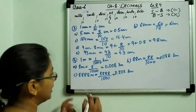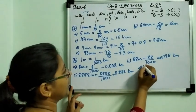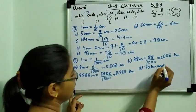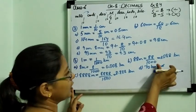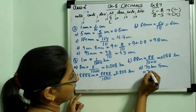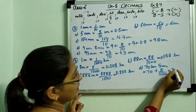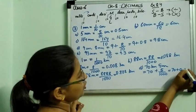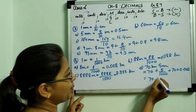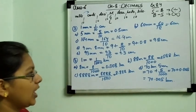Now in part D: it is 70 kilometre and 5 metre. The 70 kilometre stays as is. The 5 metre is converted: 5 divided by 1000 equals 0.005. So 70 plus 0.005 equals 70.005 kilometre. That is the answer.